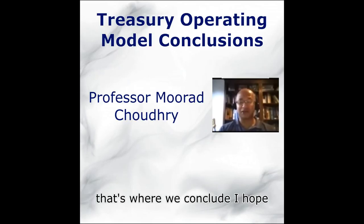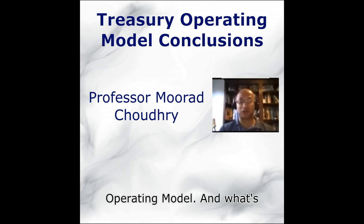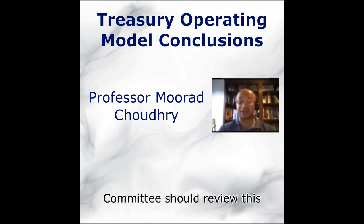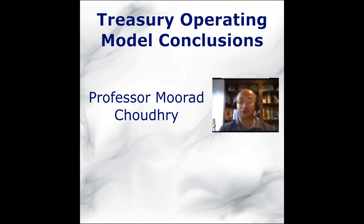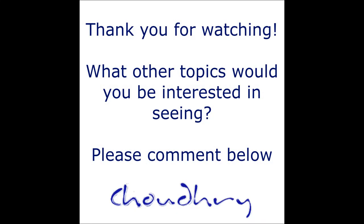So that's where we conclude. There's more than one way to set up the treasury operating model. What's important is that we set it up in a way that's appropriate for our bank in question. And of course, the asset liability committee should review this operating model on a regular basis — let's say every two years, or every year if you wish — to make sure that it's always the right one for the bank in question. Thank you.